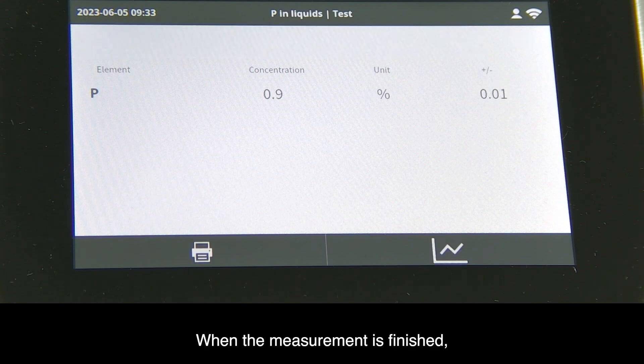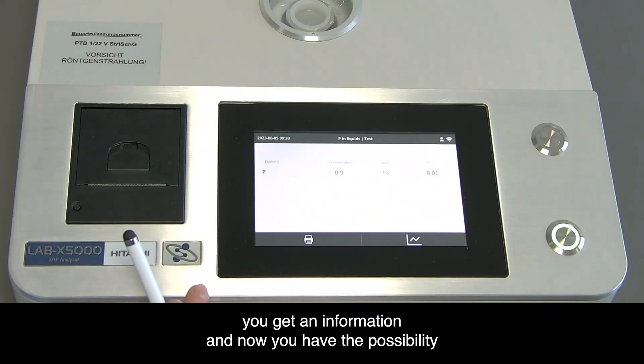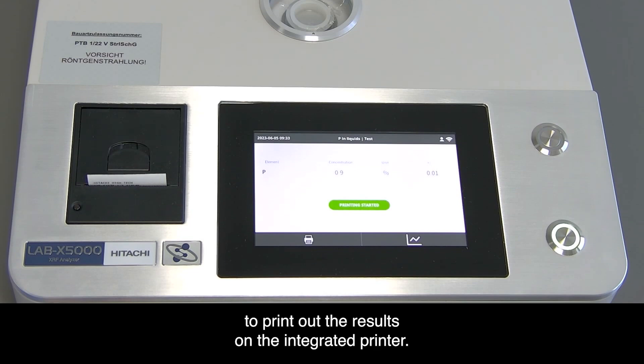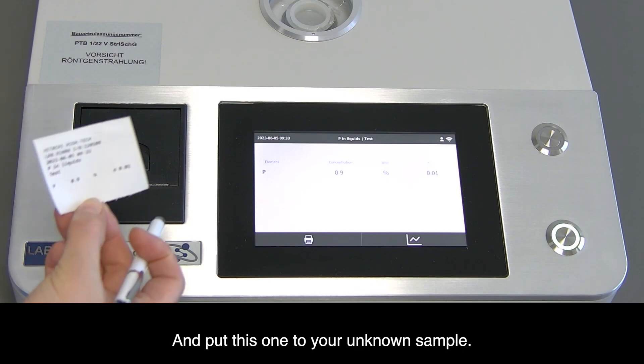When the measurement is finished, you get an information. Now you have the possibility to print out the results on the integrated printer and put this with your unknown sample.